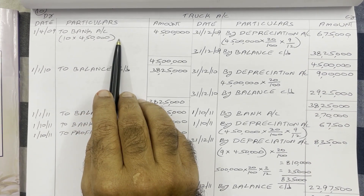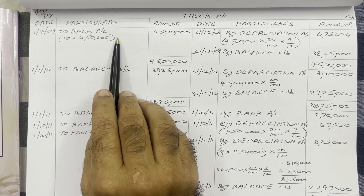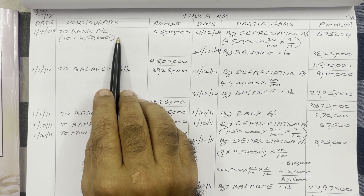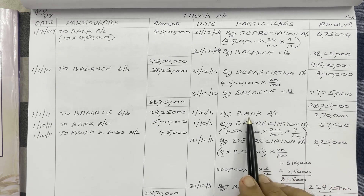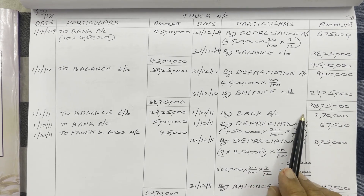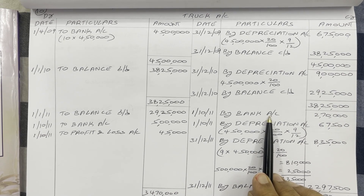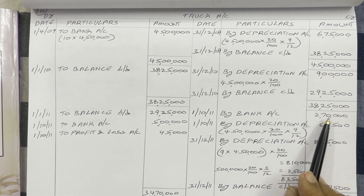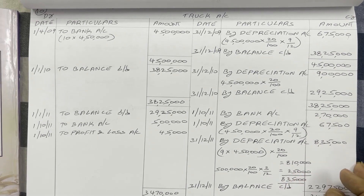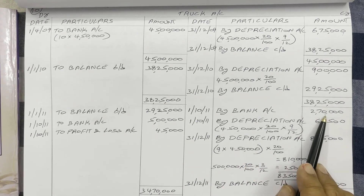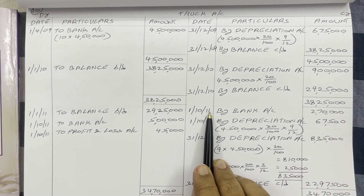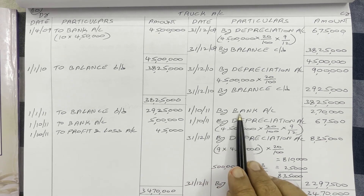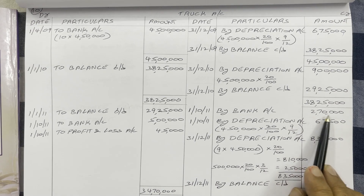In previous problems, sale information was given — sales or damage, there is not much difference. When we sell, the sale proceeds go on the credit side — we write 'To Bank'. Here instead of a sale, the truck is damaged and these trucks are insured. We applied for an insurance claim and the insurance company paid Rs 2,70,000 as a claim. This Rs 2,70,000, like sale proceeds, we adjust on the credit side. On 1st October 2011, write 'To Bank — from insurance company Rs 2,70,000'.